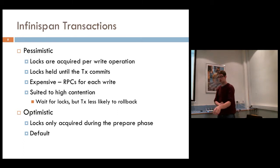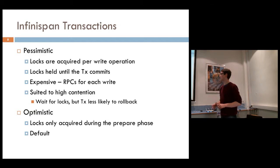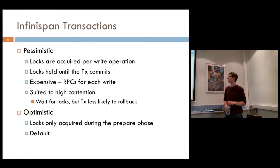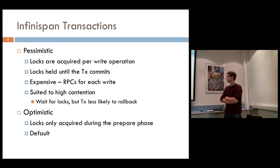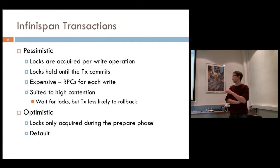The flavor of transactions we're interested in is optimistic transactions. In an optimistic transaction, locks are only acquired during the prepare phase. This means a transaction can be executed locally, prepared locally, and then sent to all destinations for the commit phase. There are two ways to do this in InfiniSpan: classic two-phase commit, and total order commit.